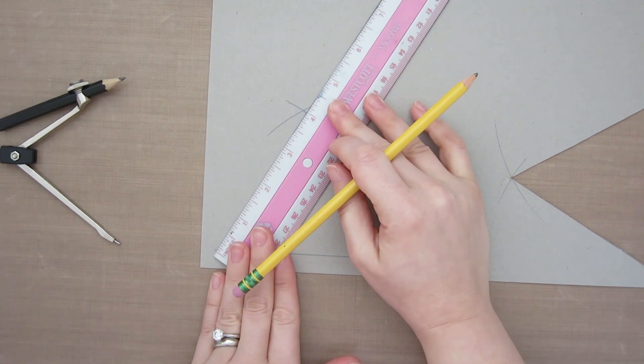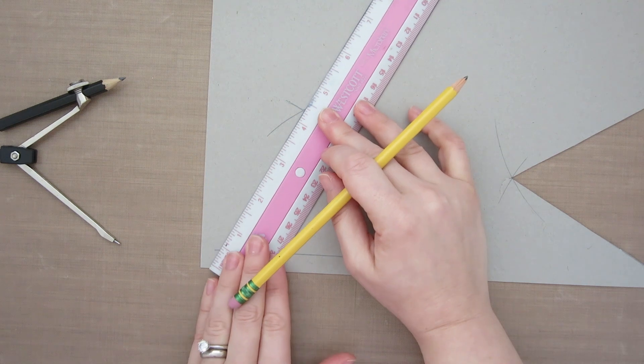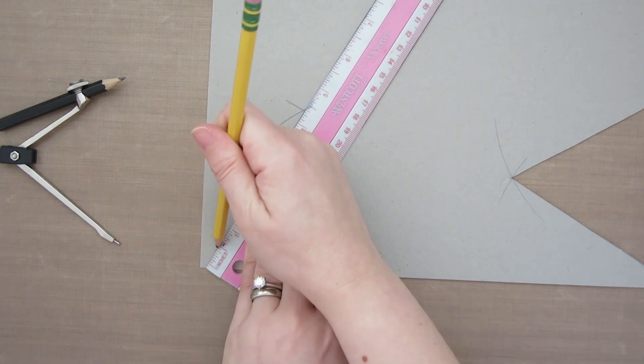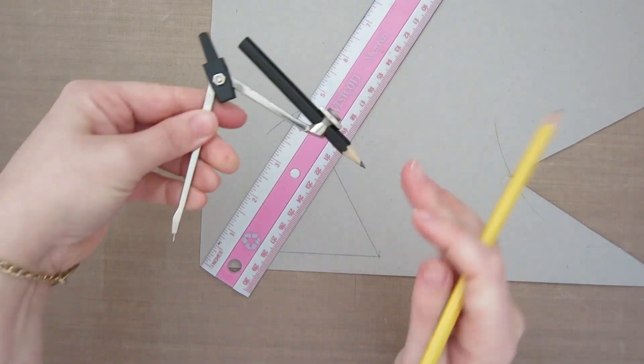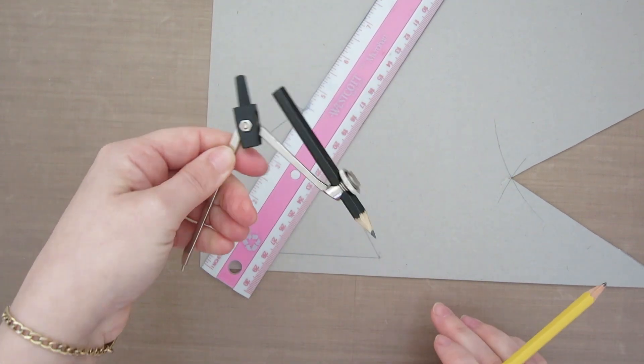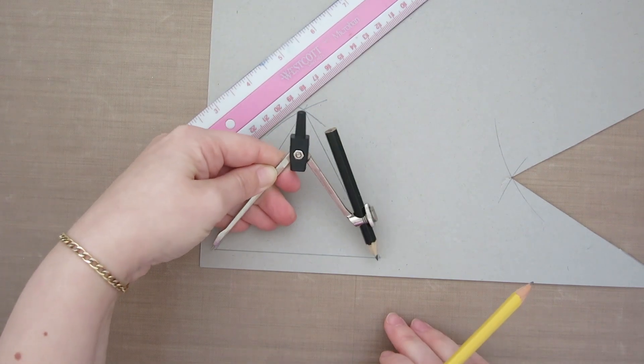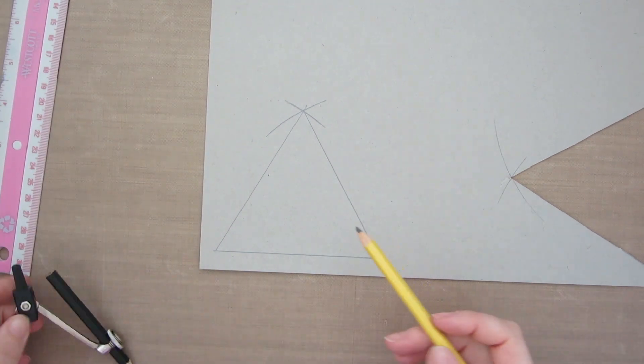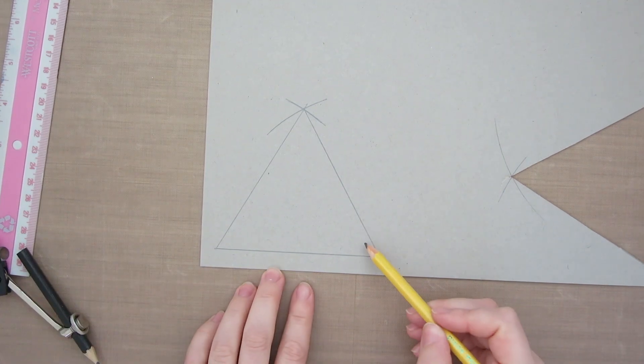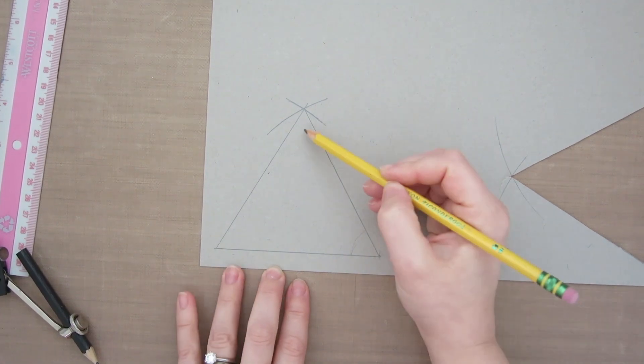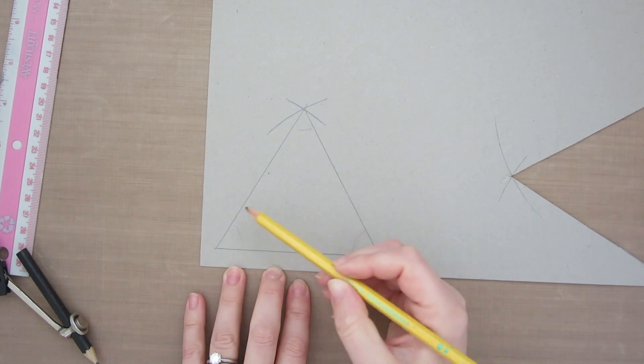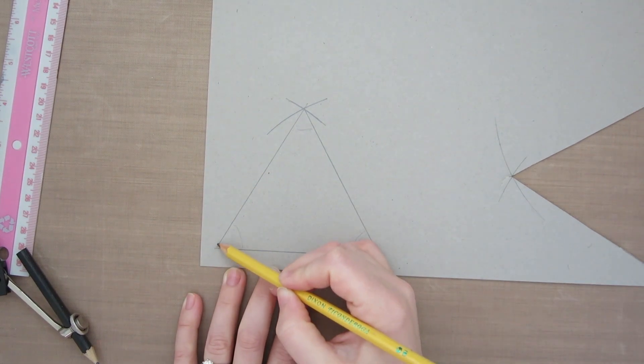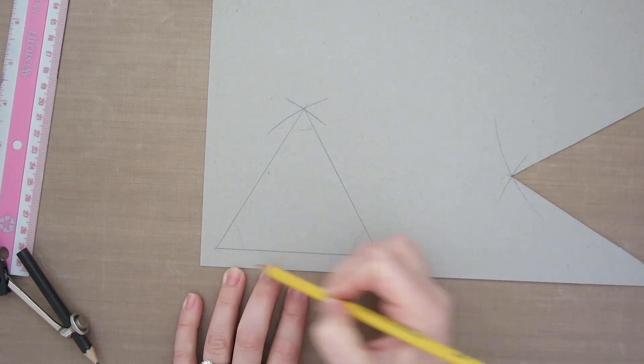Now when you measure it, if that isn't 4 inches, it may mean you need to try it one more time, being especially careful to make sure that these two points are exactly 4 inches or the distance of your line segment apart. So something interesting about equilateral triangles is that this angle, this angle, and this angle are also the same. They're all 60 degrees. And as I said before, all of the sides are the same length.